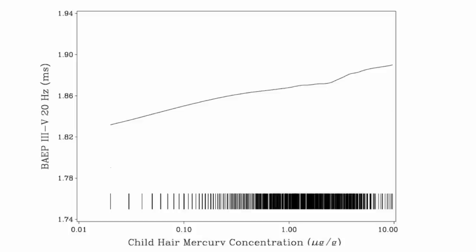You'll notice two things. The more mercury the kids had in their bodies, the longer the delay. That's bad. Also, you'll notice it's basically a straight line. It doesn't plateau out at the bottom end. The lower the mercury, the better.